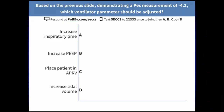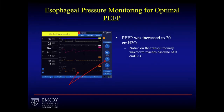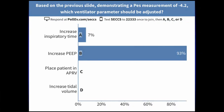First question: given the negative transpulmonary pressure measurement on the previous slide, what do we do to fix that number to bring it closer to zero or slightly positive? The answer is B — you're going to elevate your PEEP to raise your expiratory transpulmonary pressure to zero or slightly positive.